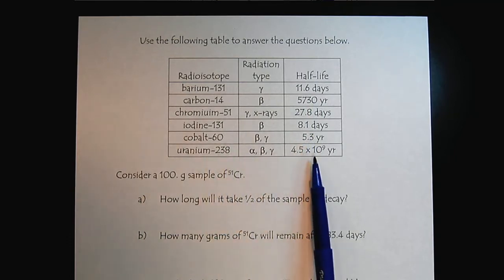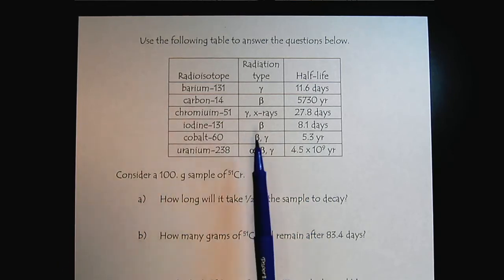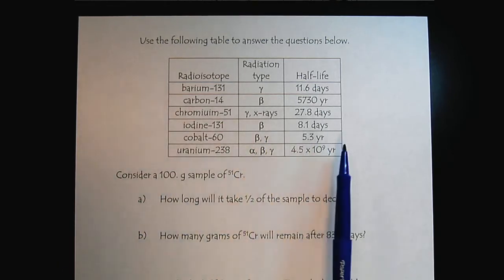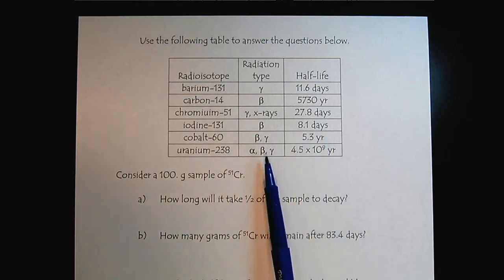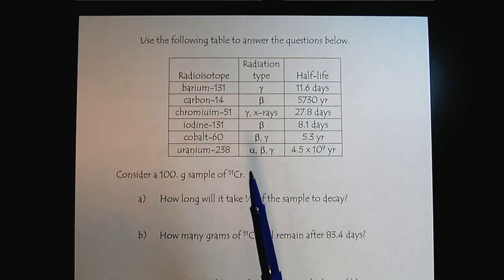Uranium, 10 to the ninth years. So there's no relationship between the type of radiation and the half-life. So alpha, beta, gamma, positron emitters, it depends on the nucleus, they can have short or very long half-lives. There's no relationship there.